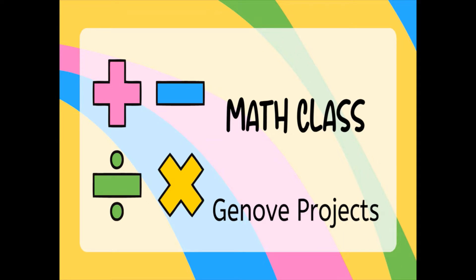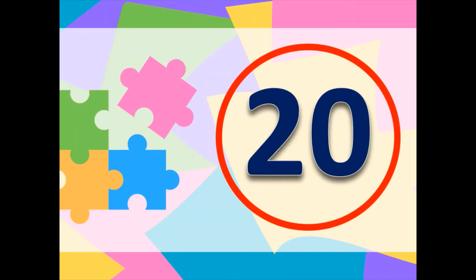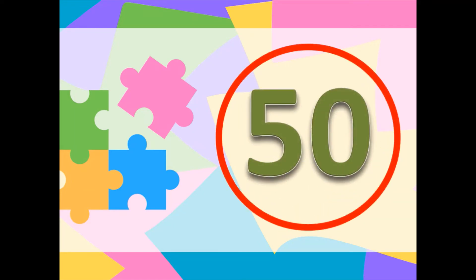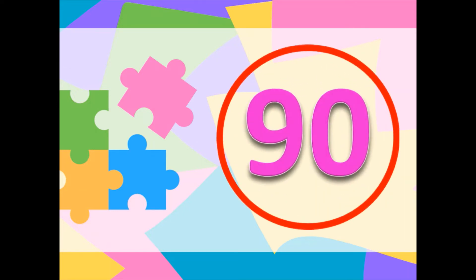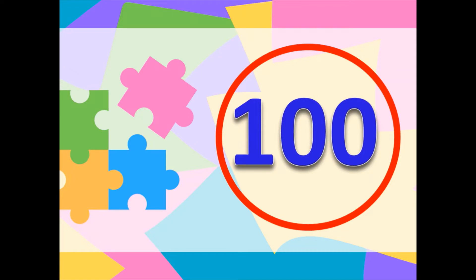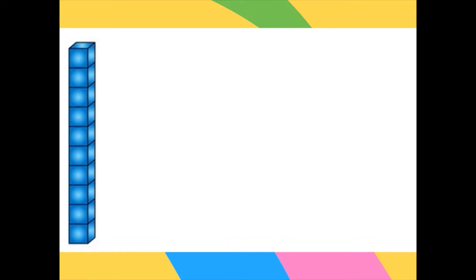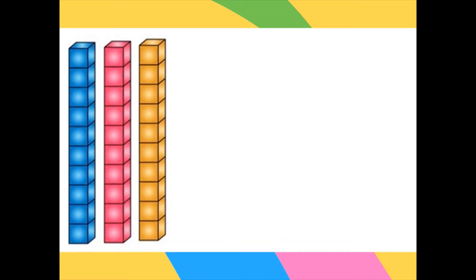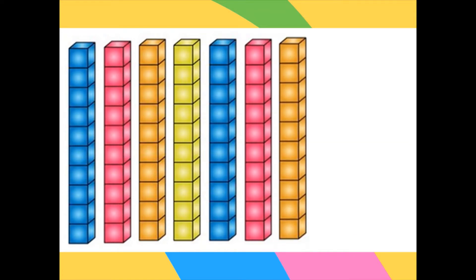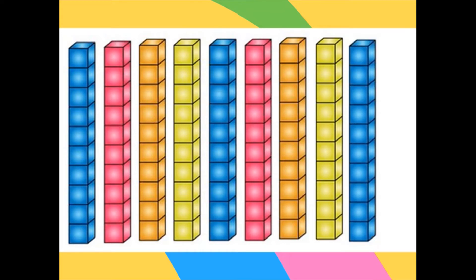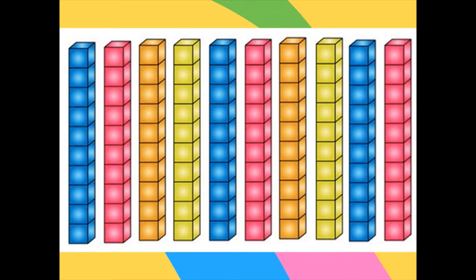We are going to skip count by tens: 10, 20, 30, 40, 50, 60, 70, 80, 90, 100. Now let's do skip counting using blocks. Are you ready? Let's do it: 10, 20, 30, 40, 50, 60, 70, 80, 90, 100. Good job, children!